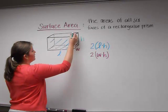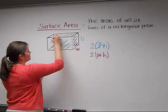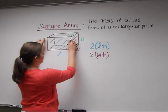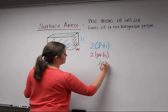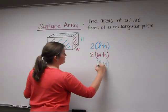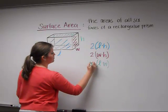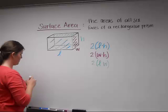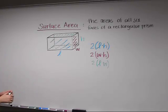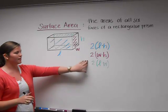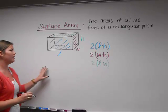Lastly, we're going to find the area of this top face, which is going to be the length times our width. Again, we can multiply it by two because of the base. So in order to find the surface area, we want to sum each of these areas.